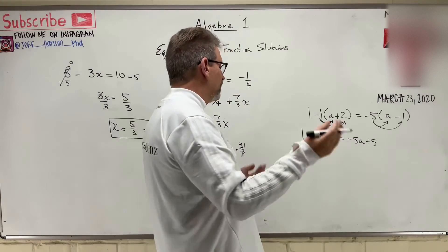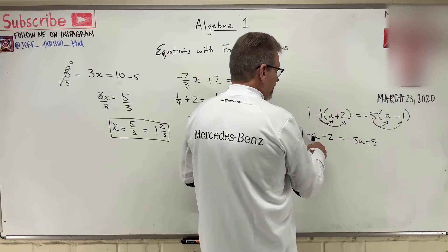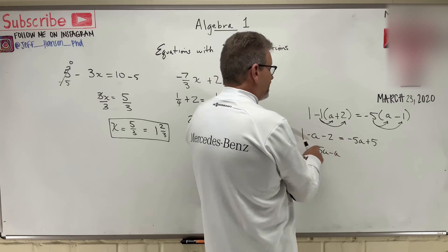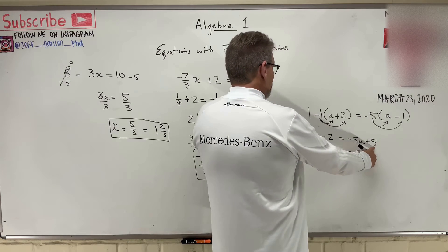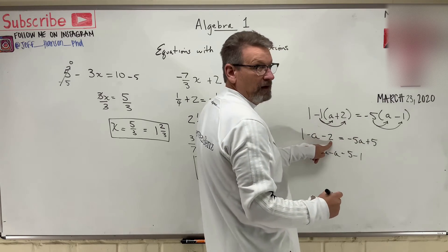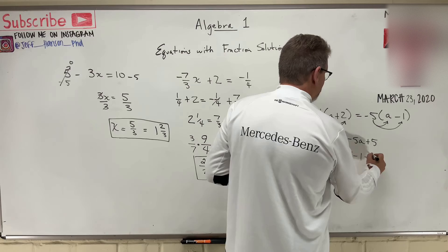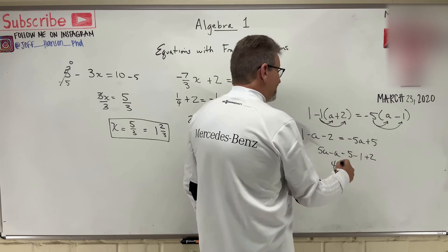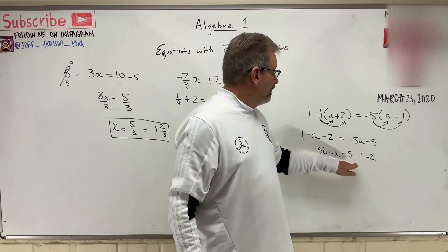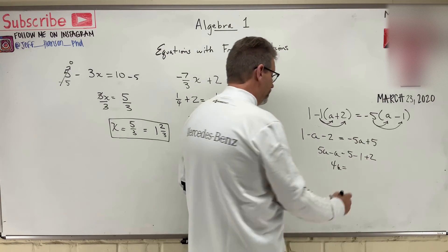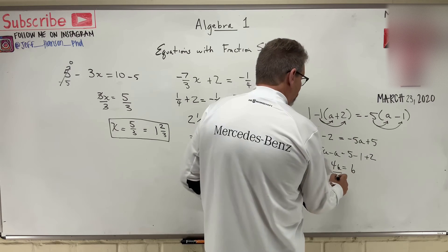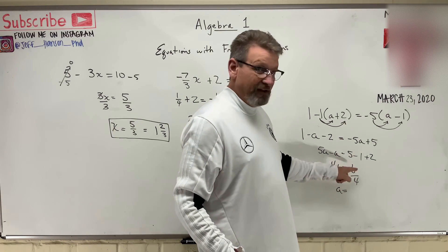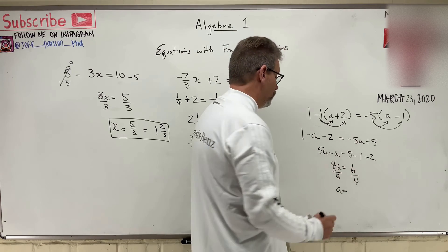Now let's get all the a's together and all the numbers together. I'm going to move this five to the other side — he's negative over here, so he'll become positive. Five a minus a, there's the minus a. Then I'm going to take these two guys and move them to the other side: is equal to five, then minus one — that'll get rid of that guy — and then that guy becomes plus two when he goes to the other side. So five a minus a — five a's minus another a — is at least four a's, is equal to five minus one, which is four, plus another two is six. Then divide both sides by four. The fours cancel out. A is equal to six over four. Does that reduce? I'm going to divide both by two, and that becomes three over two, or three halves.